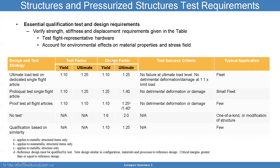The design factors go into the analysis; the test factors go into the test. If I predict 10,000 pounds of limit load due to flight conditions, that needs to be multiplied by 1.25 to account for the ultimate factor. You want to make sure you can strain gauge the test article sufficiently to validate your analysis, because you also have to show good correlation to the analysis design factors. These columns represent your margin of safety calculations.